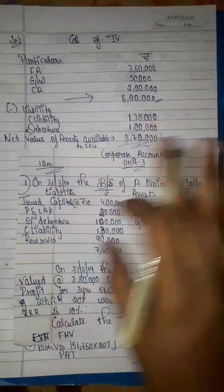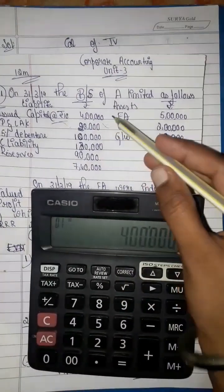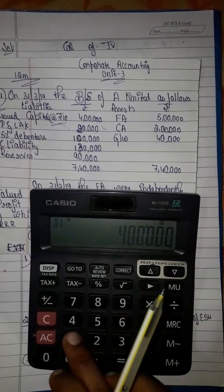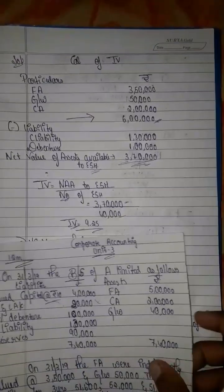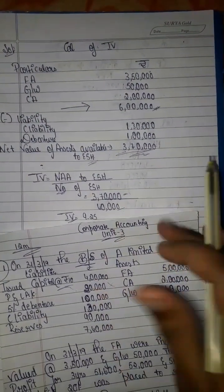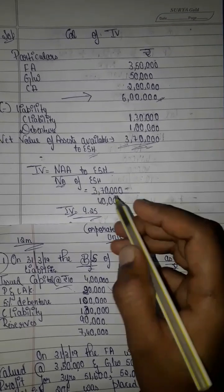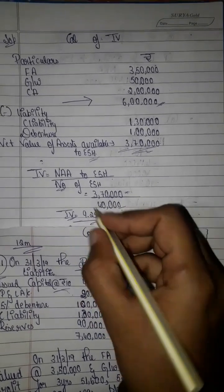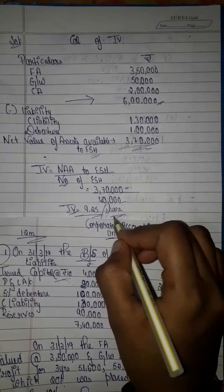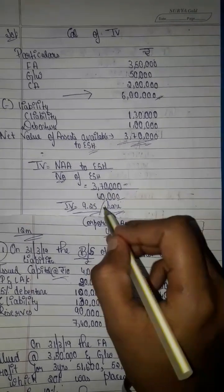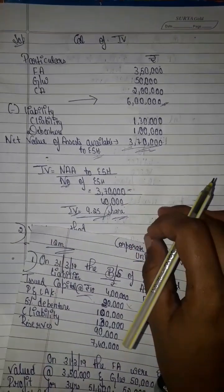We do not include preference dividend here. From the 4 lakh rupees we calculate 4 lakh divided into 10 rupees face value — that gives 40,000 equity shares. So equity shareholders' net assets divided by 40,000 shares gives us the intrinsic value (IV) per share. This is the intrinsic value method.